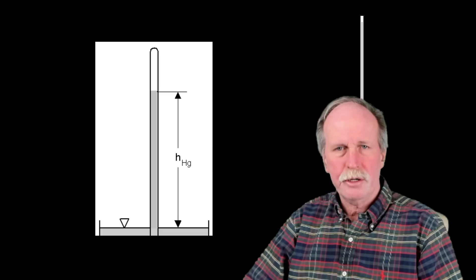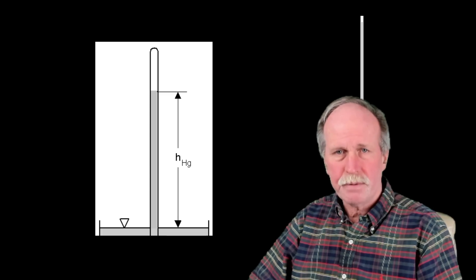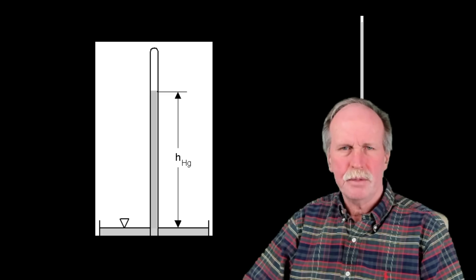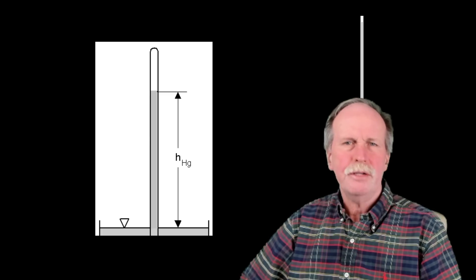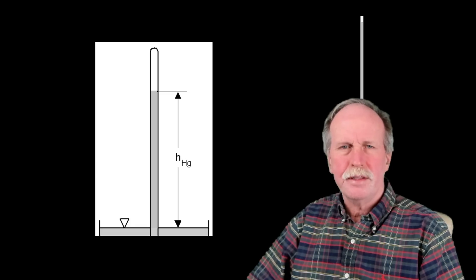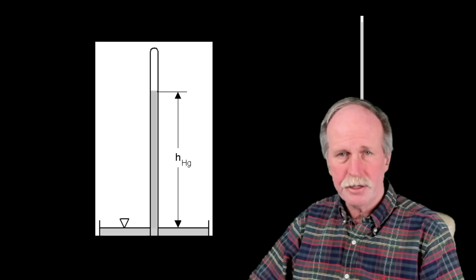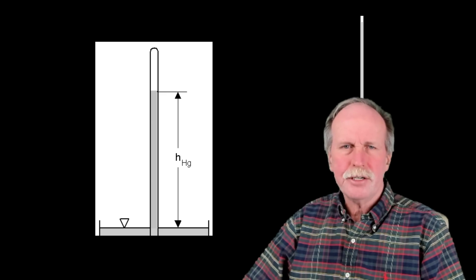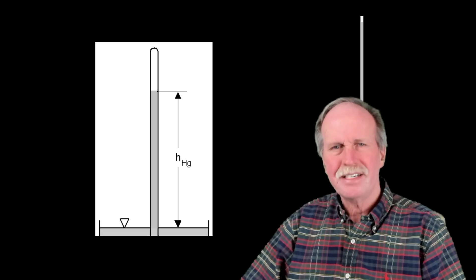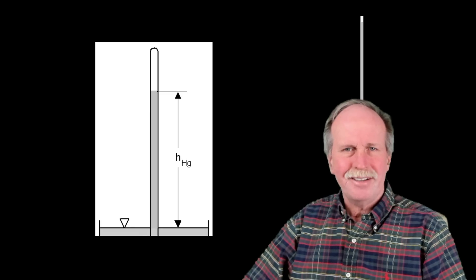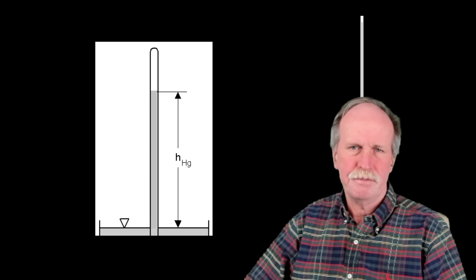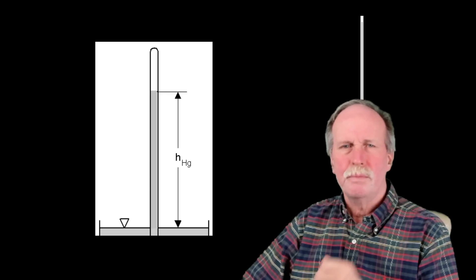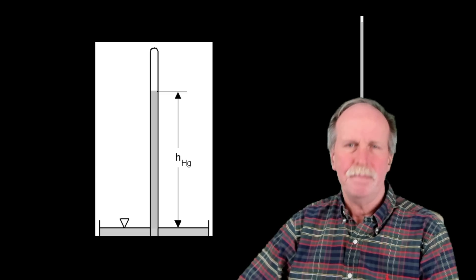This instrument is called a mercury barometer, and it is used to measure atmospheric pressure. If you take the cross section of the tube and the height of the mercury column, you can get an idea of the mass of the mercury above the surface of the pool. You can use that times the acceleration of gravity to come up with the force that the atmosphere is exerting on the column of mercury. Standard atmospheric pressure at sea level will force that column of mercury up 760 millimeters — or 29.92 inches of mercury in freedom units. If you take this entire apparatus and move it to the top of a mountain, atmospheric pressure at that level will be lower, and the column of mercury will correspondingly be lower as well.